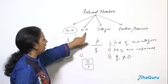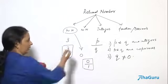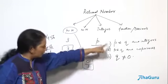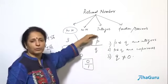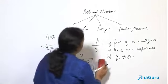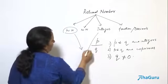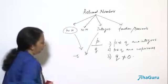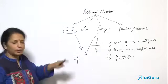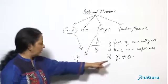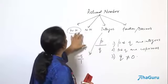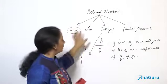All natural numbers are rational numbers — for example, 456 can be written as 456 by 1, satisfying all three conditions. So all whole numbers and natural numbers are rational numbers with denominator 1. Going to integers: minus 5 can be written as minus 5 by 1. It is an integer, P and Q are co-prime, Q is not equal to 0. So all integers are also rational numbers. These three subsets all belong to rational numbers.